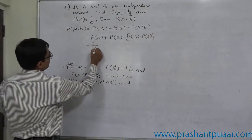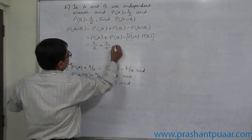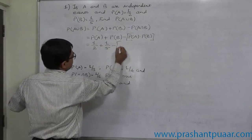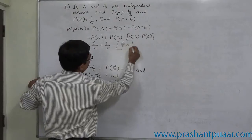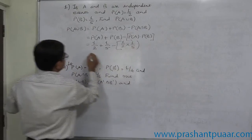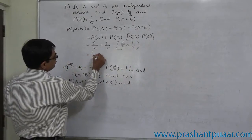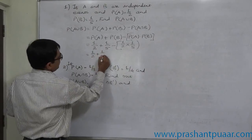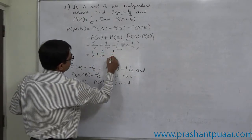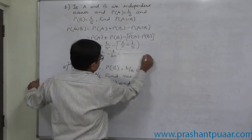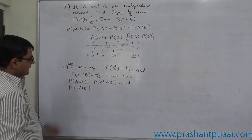Substituting the values: 1/2 plus 1/5 minus 1/2 into 1/5. The simplification gives 1/2 plus 1/5 minus 1/10. Now take the LCM of 10.